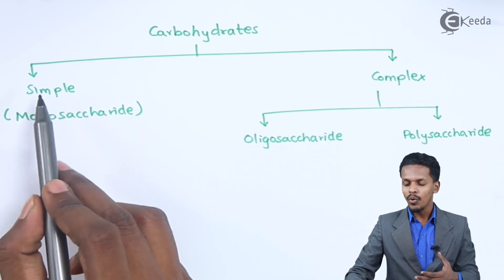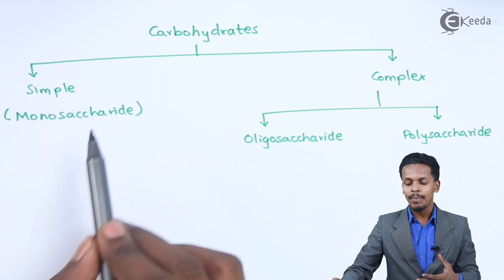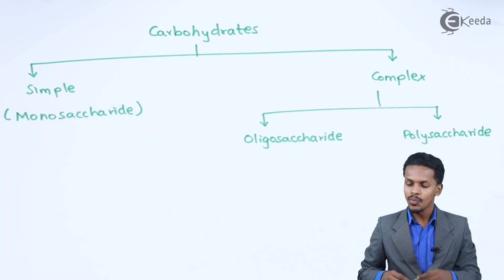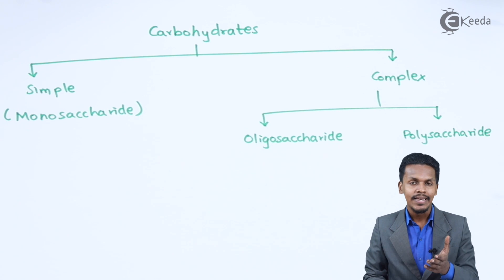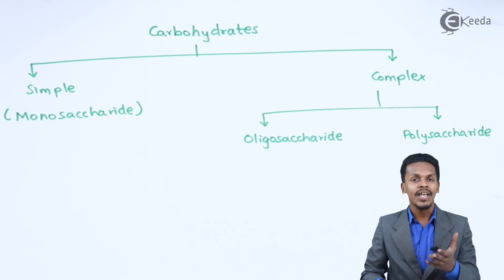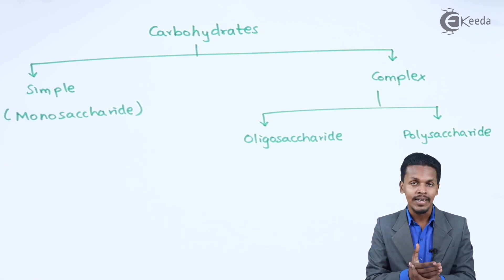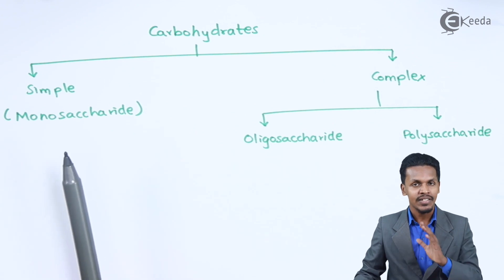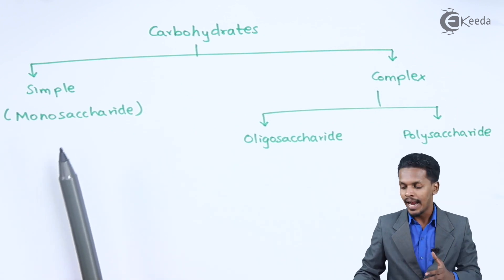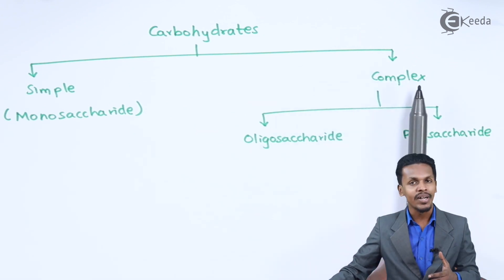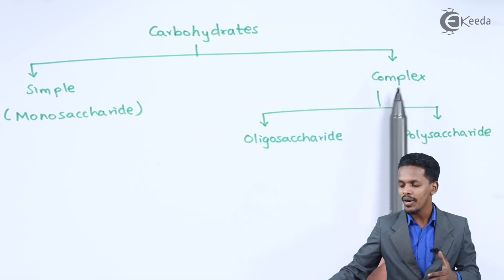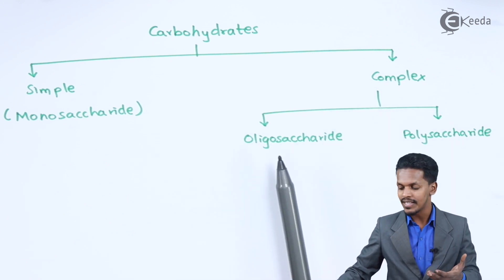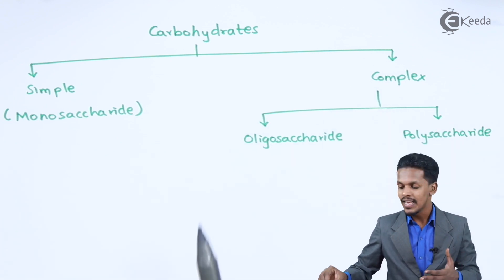Monosaccharides are those Carbohydrates that cannot be further hydrolyzed. Complex Carbohydrates have been divided into two types: Oligosaccharides and Polysaccharides.